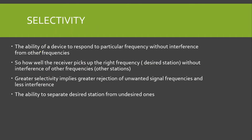Selectivity is the ability of a device to respond to a particular frequency without interference from other frequencies. In the case of a receiver, selectivity is how well the receiver picks up the right frequency band — the desired station — without interference from other frequencies or stations. Greater selectivity implies greater rejection of unwanted signal frequencies and less interference. Basically, selectivity is the ability to separate the desired station from undesired ones.